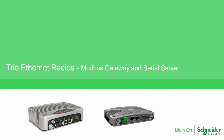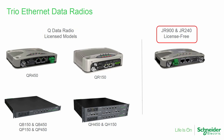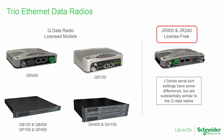In this video, the viewer will learn how to configure the Modbus gateway and serial device server features of the Trio Ethernet data radios. Trio has two Ethernet radio product lines. The Q data radios are licensed products operating in either the 400 to 518 MHz UHF range or the 135 to 175 MHz VHF range. The J-series radios are license-free products operating in either the 900 MHz or 2.4 GHz bands. The J-series port settings have some minor differences but are substantially similar to the Q data radios. The rest of this video will focus on the Q radio.